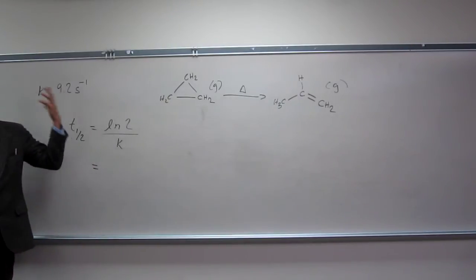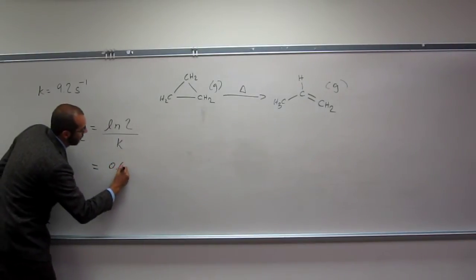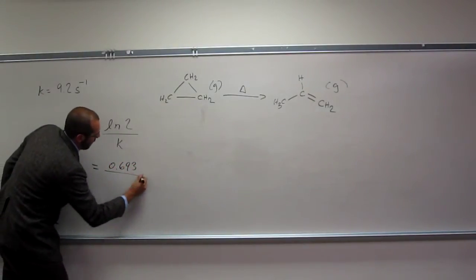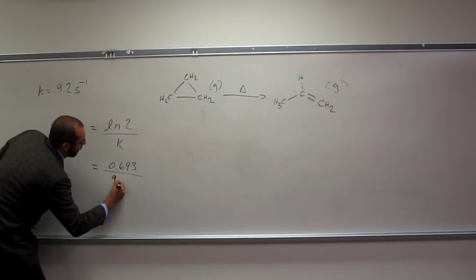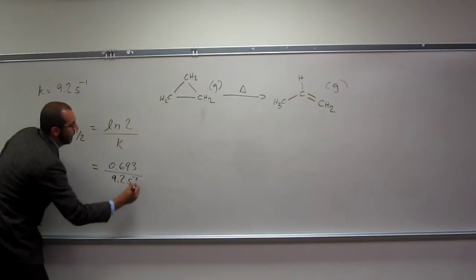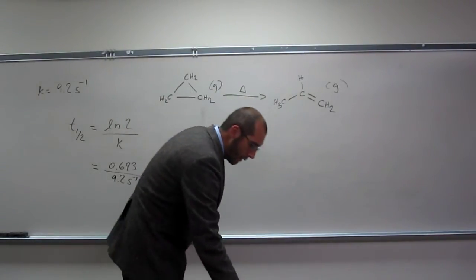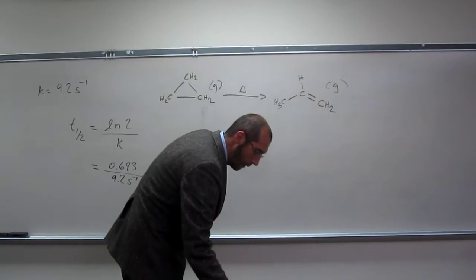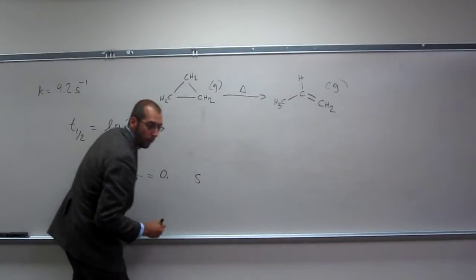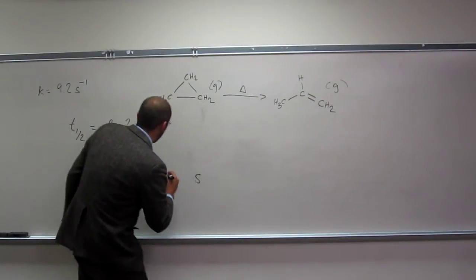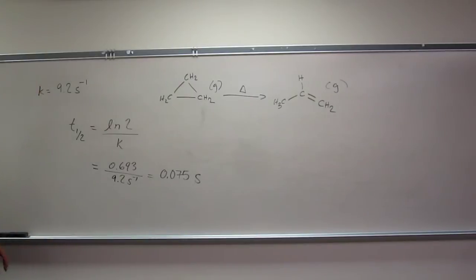Remember LN of 2, it's something that you kind of use a lot. So I tend to remember it. So we're going to get 0.693 divided by k, which is 9.2 per second. So we're going to get seconds over here. And then it's 0.0757. Okay.